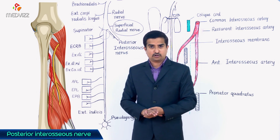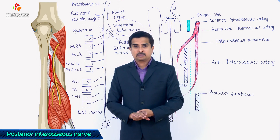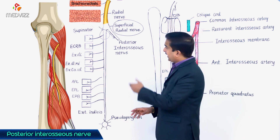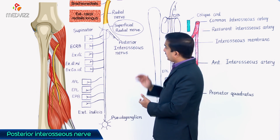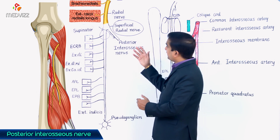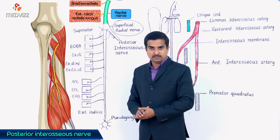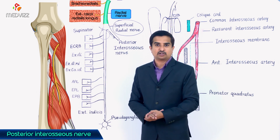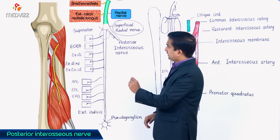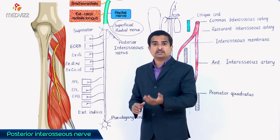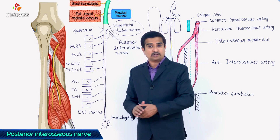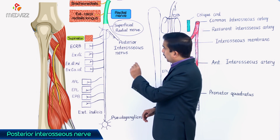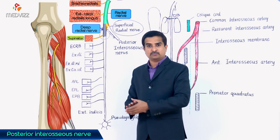Not all muscles of the radial and dorsal aspect of the forearm are innervated by the posterior interosseous nerve. For example, muscles like brachioradialis and extensor carpi radialis longus are innervated by direct branches from the radial nerve trunk itself — not by the deep branch or the posterior interosseous nerve. Anconeus, located at the posterior aspect of the arm, is also innervated by the radial nerve, and the supinator is innervated by the deep branch of the radial nerve.